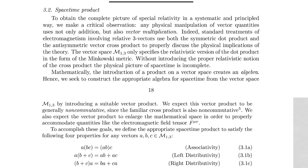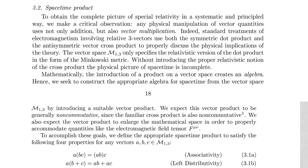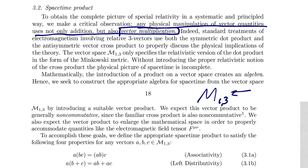That next section is the space-time product. To obtain a complete picture of special relativity in a systematic and principled way, we make a critical observation: any physical manipulation of vector quantities uses not only addition but also vector multiplication. Here we're talking about turning something into an algebra. M(1,3) is just a vector space — it is not an algebra, because we haven't defined any form of multiplication of two four-vectors that would give you another four-vector.